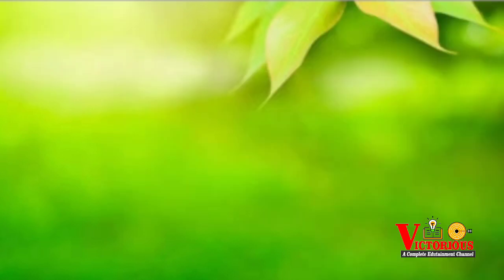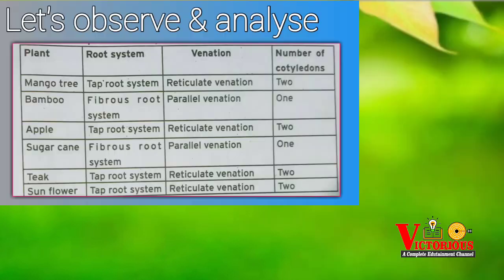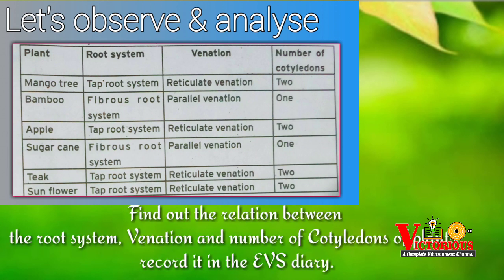Now, friends, let's observe and analyze the table showing the root system, venation, and number of cotyledons of the plants which Shanamol observed. Study the table carefully and find out the relation between the root system, venation, and number of cotyledons of plants. Record it in your environment diary.